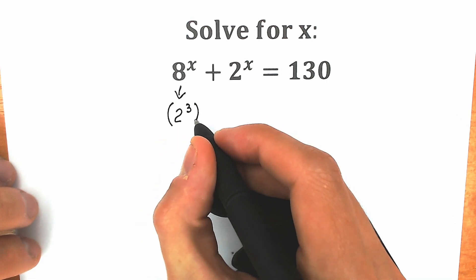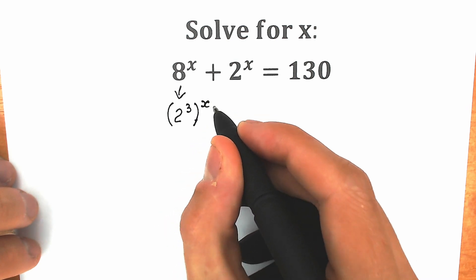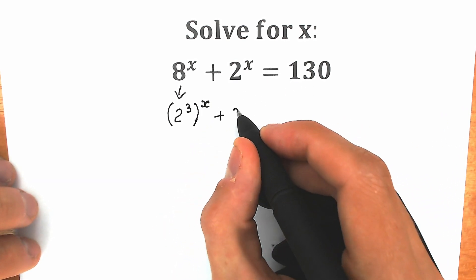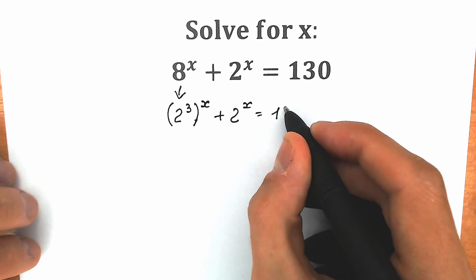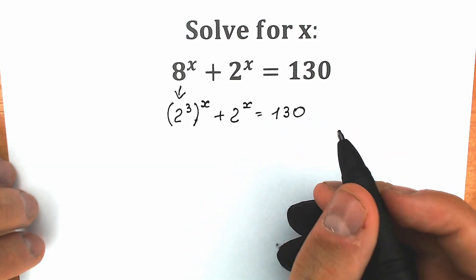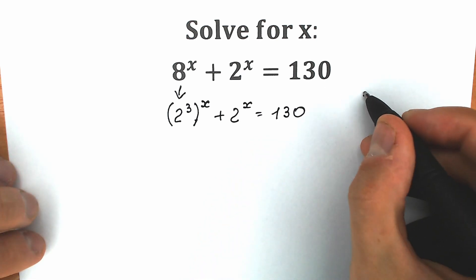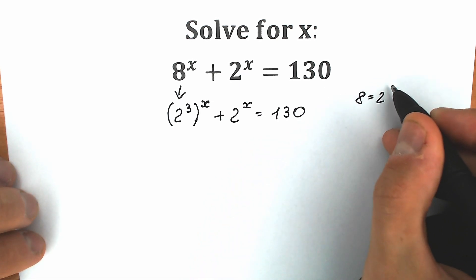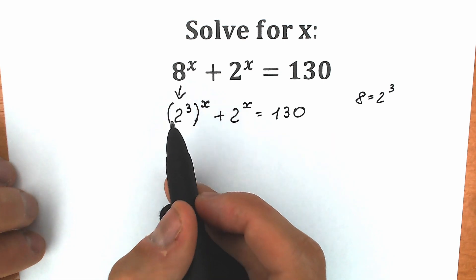So we have 2 to the power 3 raised to the power x, plus 2 to the x, equal to 130. This is our first step. 8 equals 2 cubed — so we changed 8 by 2 cubed.